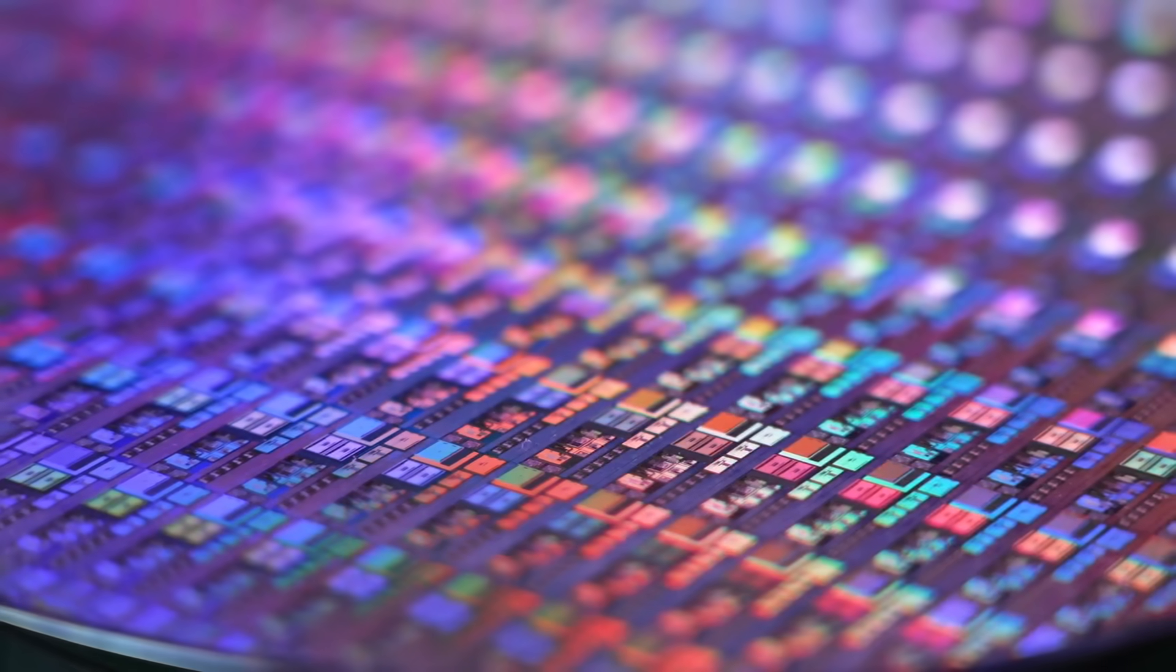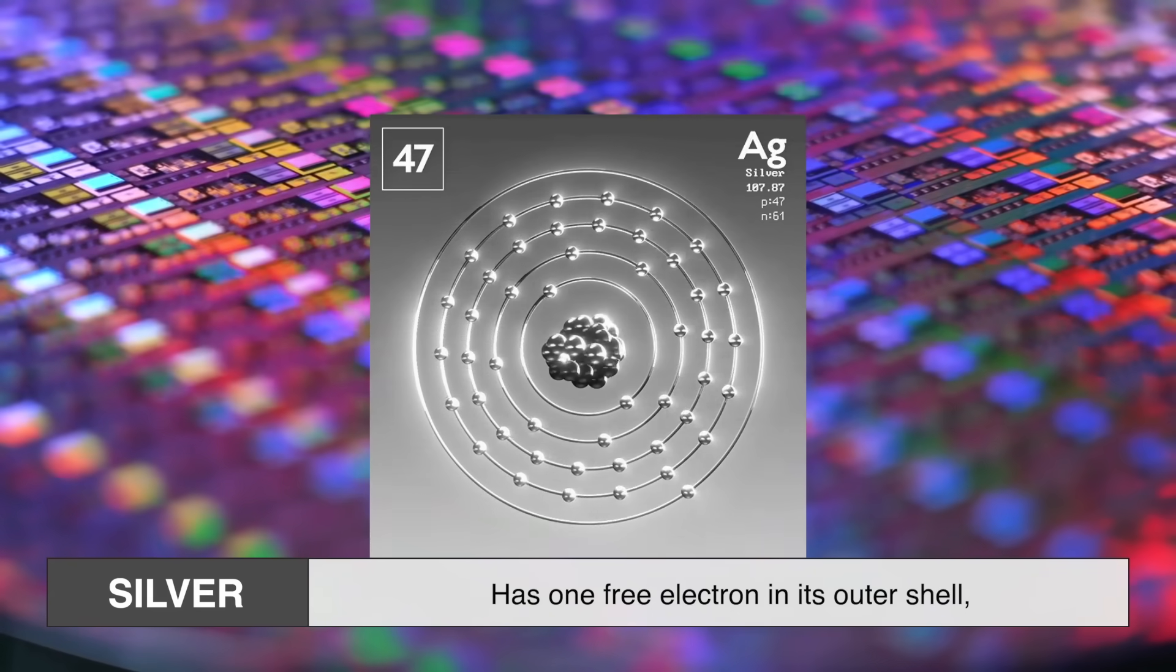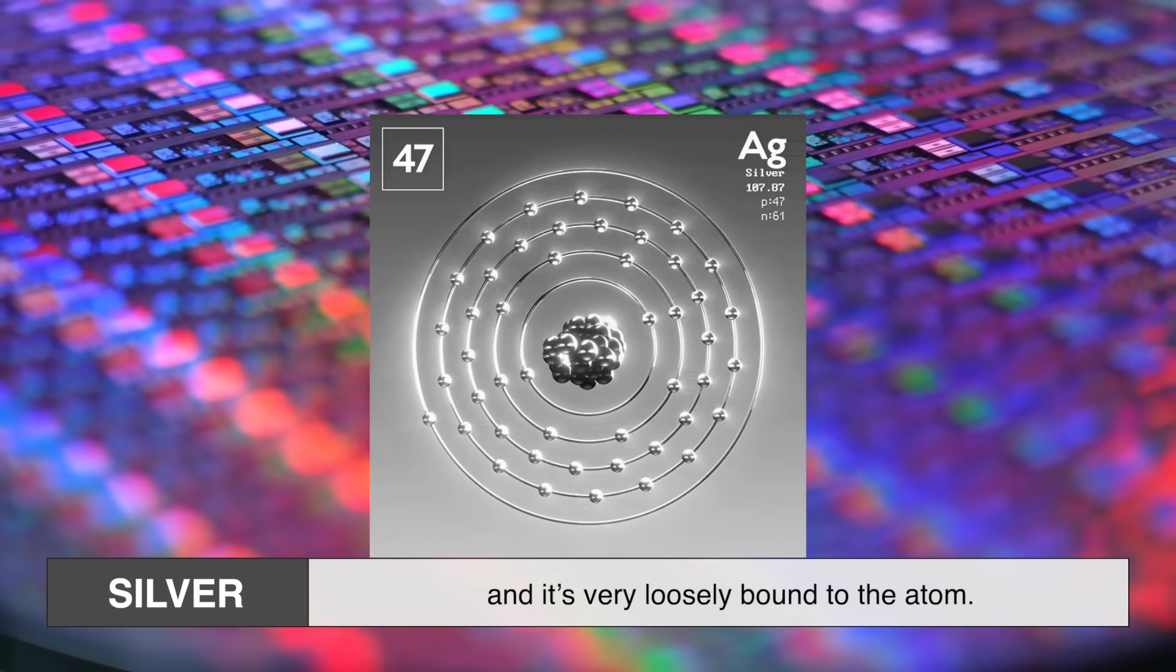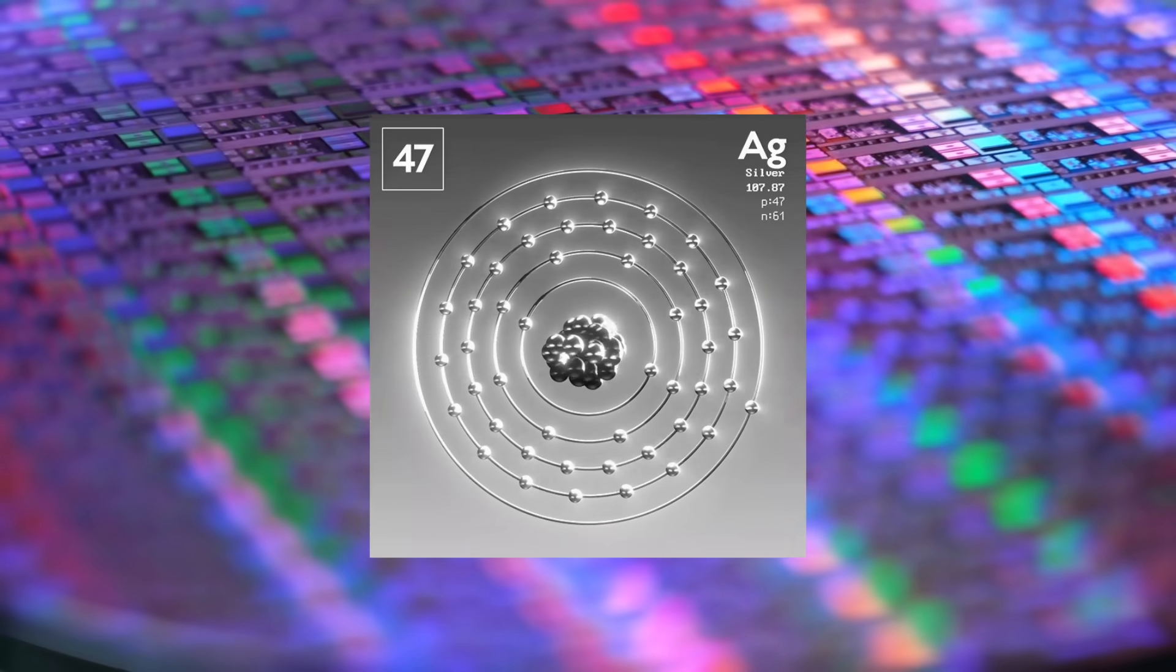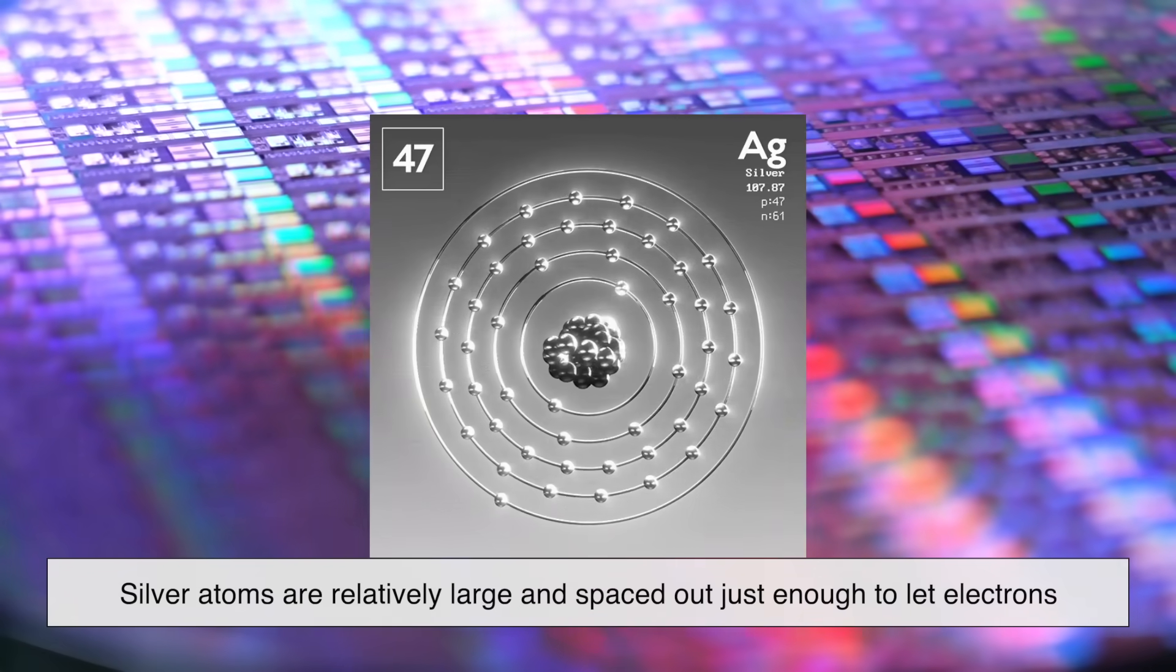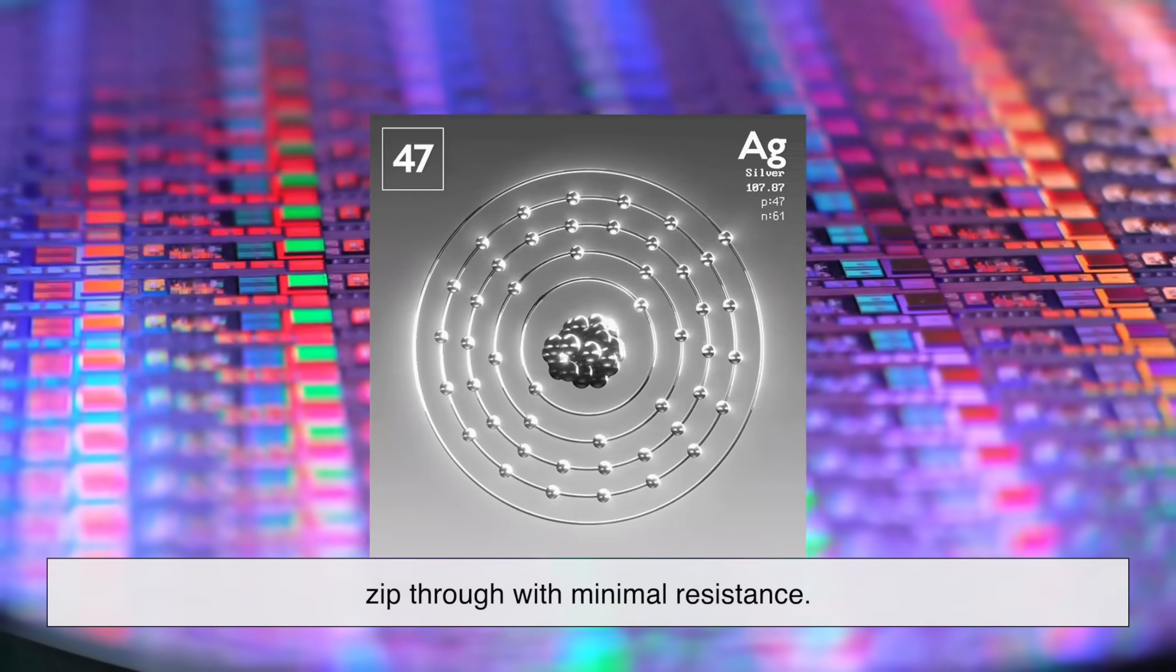It all comes down to silver's atomic structure. Silver has one free electron in its outer shell, and it's very loosely bound to the atom. This means it can move around easily. On top of that, silver atoms are relatively large and spaced out just enough to let electrons zip through with minimal resistance.